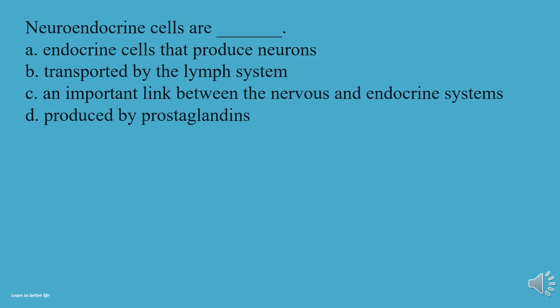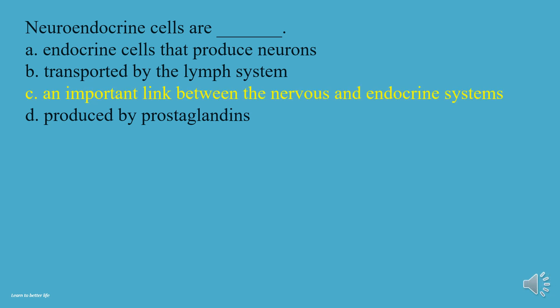Neuroendocrine cells are: A, Endocrine cells that produce neurons. B, Transported by the lymph system. C, An important link between the nervous and endocrine systems. D, Produced by prostaglandins. The answer is C, an important link between the nervous and endocrine systems.